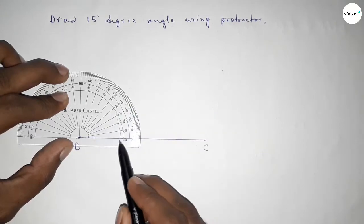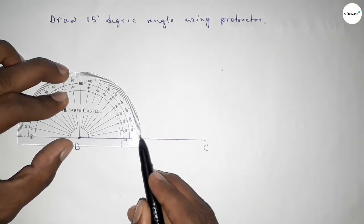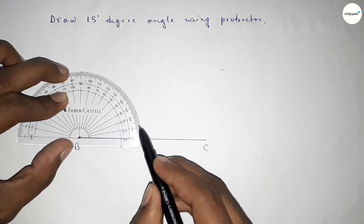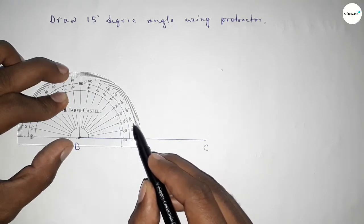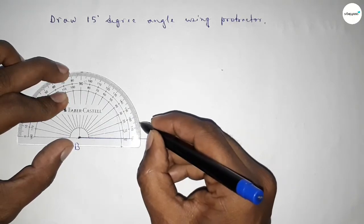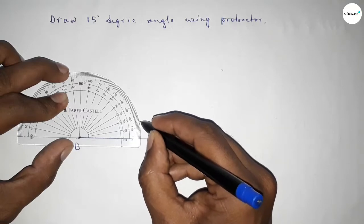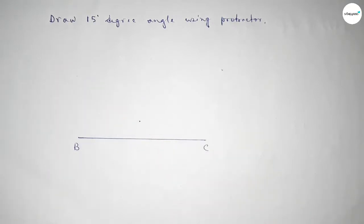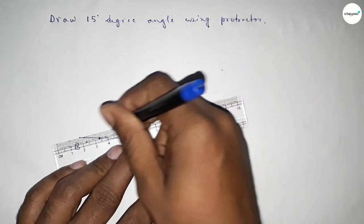And counting 15 degrees. Starting 0, 1, 2, 3, 4, 5, 6, 7, 8, 9, 10, 11, 12, 13, 14, 15. So this is 15 degrees. Now joining this to get a 15 degree angle.